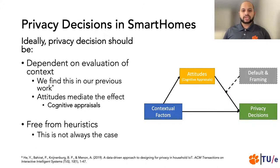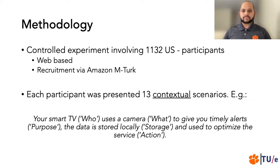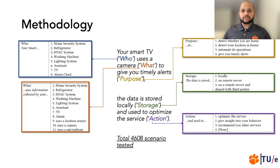This, however, is not the case. We show that defaults and framing not only have a direct effect on privacy decisions, but they influence cognitive appraisals necessary to arrive at those decisions. To investigate these effects, we conducted a web-based controlled experiment involving 1132 US-based participants recruited via Amazon Mechanical Turk. Each participant was presented with 13 scenarios, each scenario including the one on this slide, was a combination of five different contextual factors which had multiple levels.